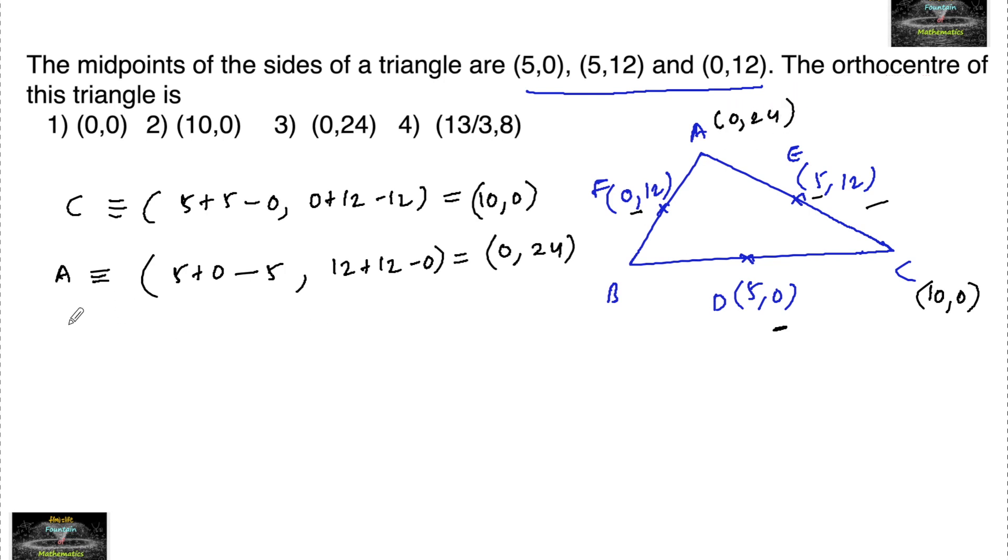So we can consider this point vertex A is (0,24). And vertex B can be written (5+0-5, 0+0-0), which is (0,0). So this is (0,0).